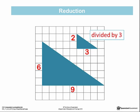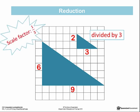When writing the scale factor for a reduction we use a fraction. The denominator of the fraction is the number by which the original dimensions were divided. For these triangles we divided the original dimensions by 3, so the scale factor is 1 third.